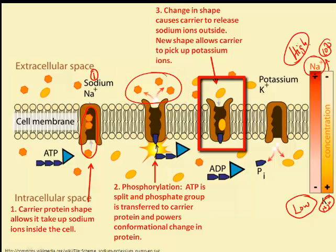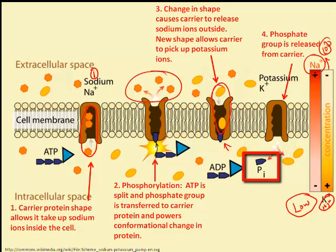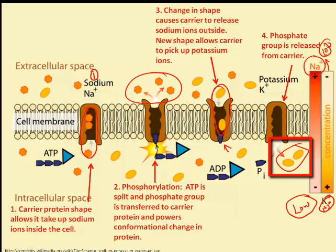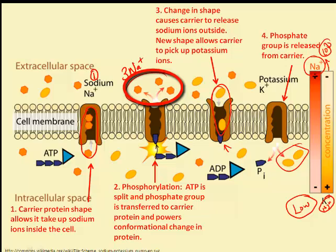The result of the shape change is that sodium is released on the outside of the cell, and the new shape allows the carrier to pick up potassium ions. When the phosphate group is released from the carrier, the protein reverts back to its original shape and releases the potassium ions inside the cell.